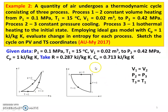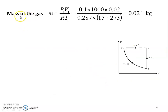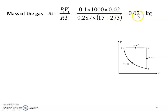Mass of the gas: M equals P1·V1 divided by R·T1. Substituting: P1 equals 0.1 MPa converted to kilopascal by multiplying by 1000, V1 equals 0.02 m³, R equals 0.287, T1 equals 15 degrees Celsius plus 273. Calculating gives mass M equals 0.024 kilogram.